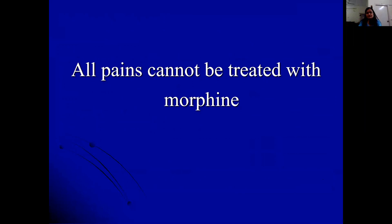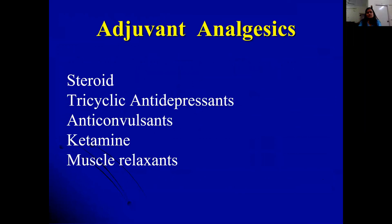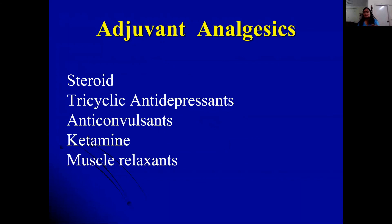Not all pain can or should be treated with morphine. Adjuvant medications play an important role: steroids for inflammation and edema, tricyclic antidepressants and anticonvulsants for neuropathic pain, ketamine for refractory chronic pain, skeletal muscle relaxants for muscle spasm, and smooth muscle relaxants for spasmodic or colicky pain. For different kinds of pain conditions, different medications are relevant — morphine is not always the appropriate choice.